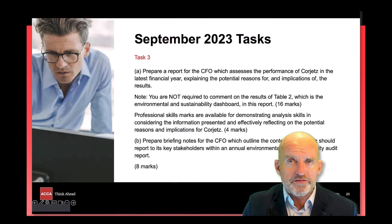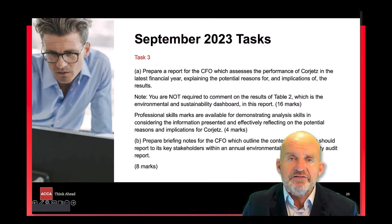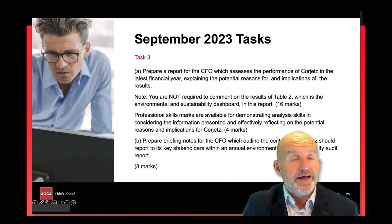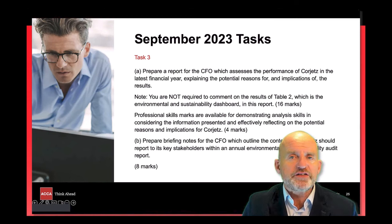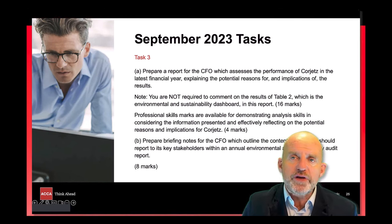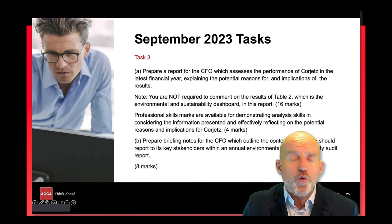The second part of task three asked about the typical content one should have in an annual environmental and sustainability report. Our attention was drawn to this area in the pre-seen, as it talked about sustainable behaviour being a key value. Whilst reviewing the pre-seen we considered KPIs for all of the values and not just sustainability, so doing this should have prepared us well to answer this question.